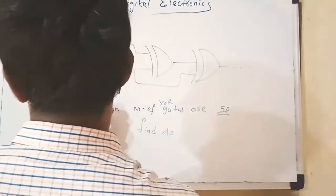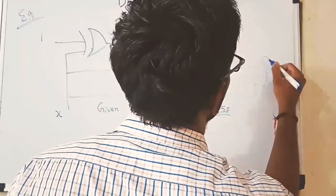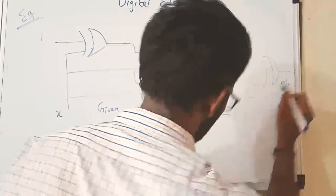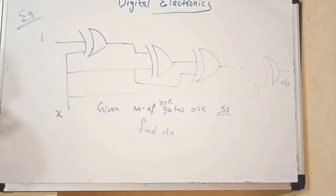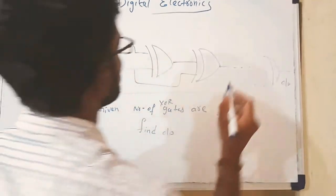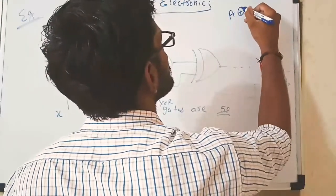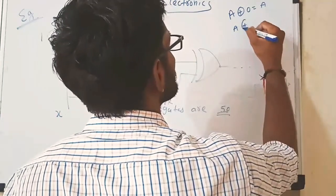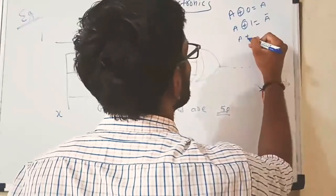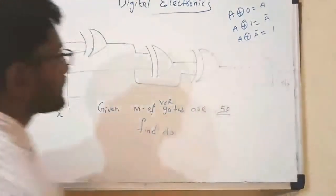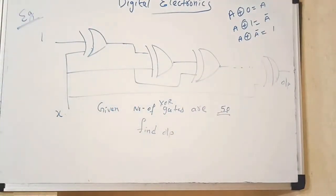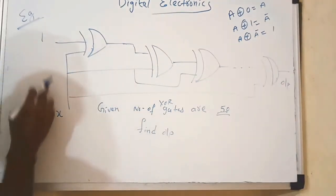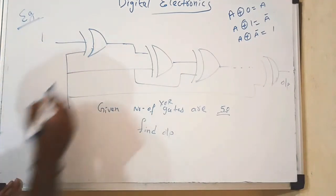I am extending up to these two. If this value is X, we need the output at the 50th gate. Given in the problem there are 50 XOR gates. We know that for an XOR gate: A XOR 0 is nothing but A, which is a buffer. A XOR 1 is nothing but the complement. Also, A XOR A-complement is nothing but 1. Now in this question, the input to the first gate is 1 and the other input is X. When X and 1 are XORed, we get the output as X-bar.